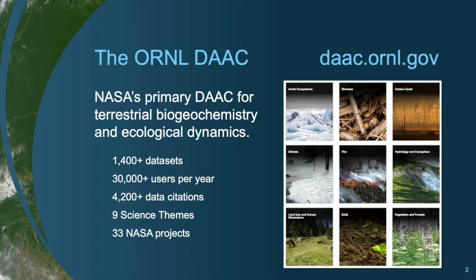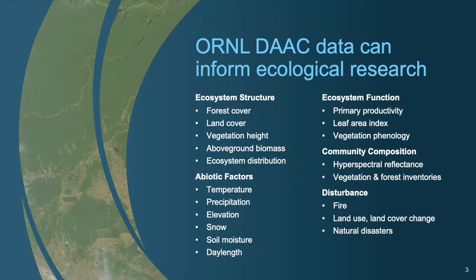The ORNL DAAC integrated web application hosts over 1,400 datasets and serves over 30,000 users per year. All datasets are categorized by one or more science theme, and these themes were selected to make data discovery easy for ecologists. The terrestrial biogeochemistry and ecology domain is diverse, and as the NASA active archive supporting this domain, the ORNL DAAC holds a diverse collection of data ranging across many ecological research topics.